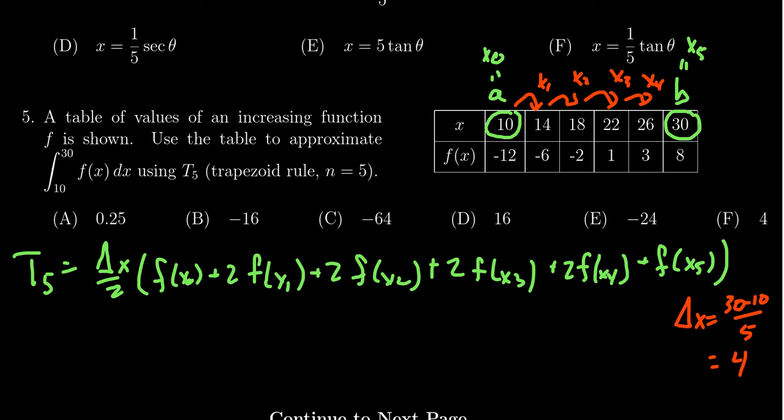All right, what do we do next? Well, we start plugging these values in here. We're going to get delta x which was 4 over 2. We'll come back to that one. We're going to take f(x0), that's this number right here, we get a negative 12 like so.